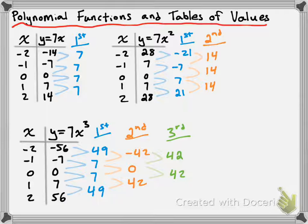Now what I'm going to do — and this is going to seem kind of weird at first, but I will explain it in a moment — I'm going to rewrite that 7 in a very specific way. So the constant differences in this case are going to be equal to 7 times 1, which is of course 7. Again, I will be explaining that soon.